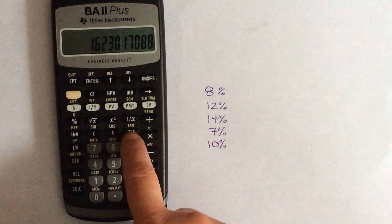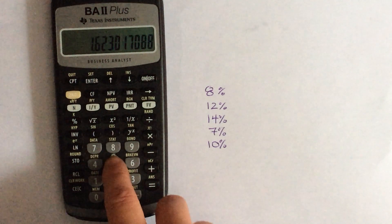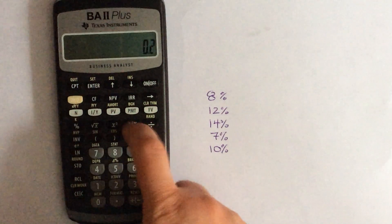So you're going to press the y to the x button here to raise it to the power. You're going to hit 5, then 1 over x.